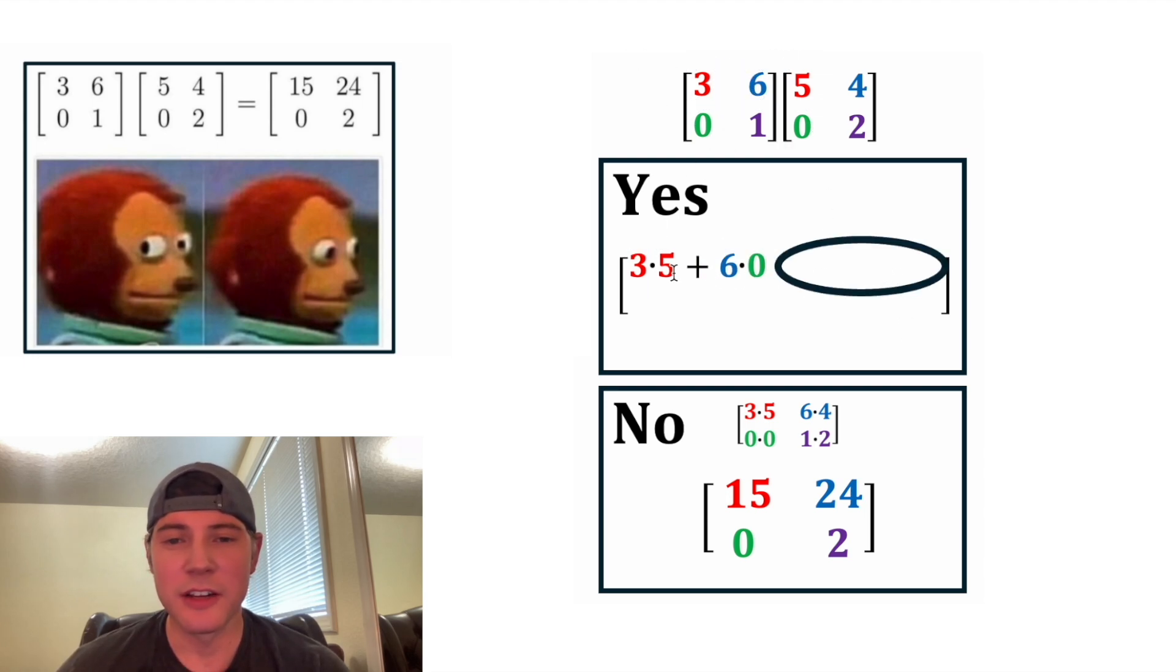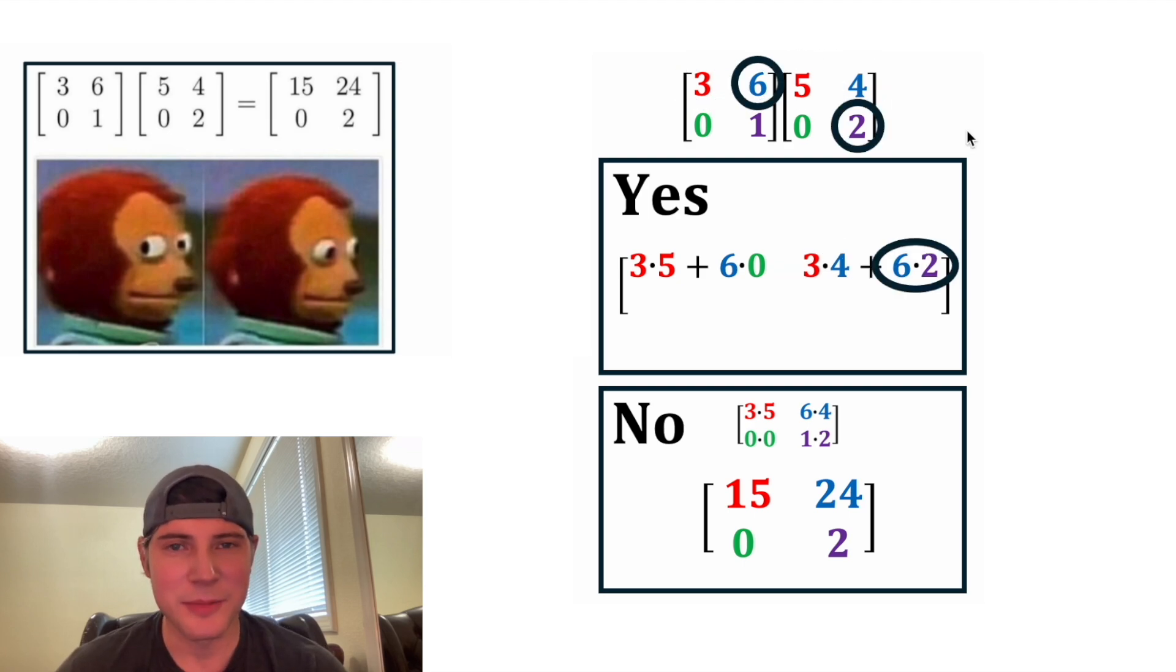Now for this one, it's located in the first row of the second column. So we're going to do the first row and the second column. For this one, we're going to do 3 times 4 plus 6 times 2.